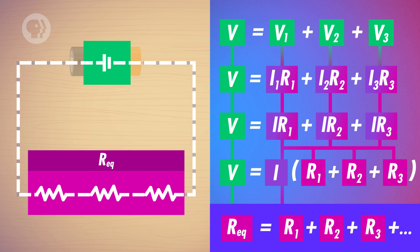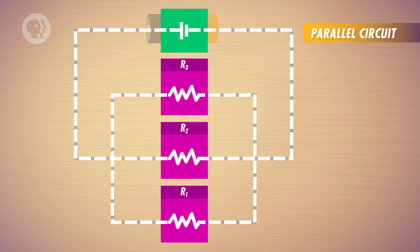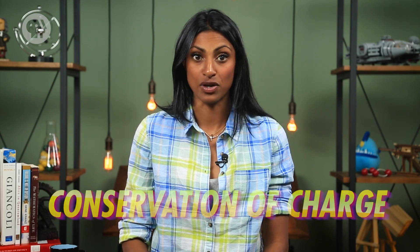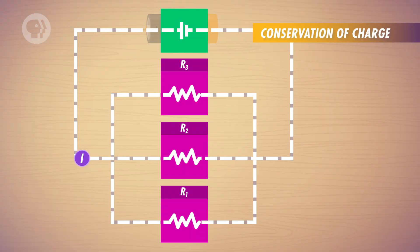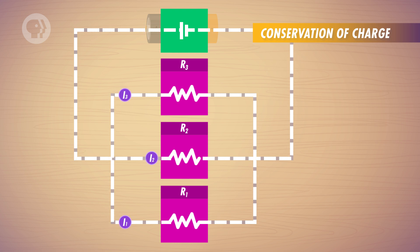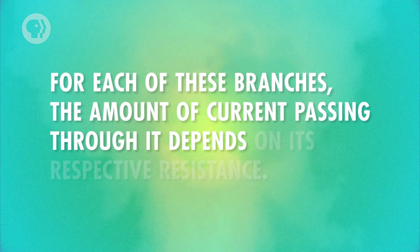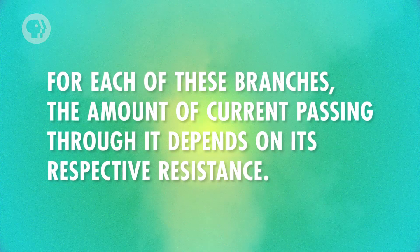Now, there's another way you can combine resistors in a circuit — by splitting one path of the current into two or more branches. When multiple resistors are configured so the current splits into many branches from a single source, they're said to be connected in parallel. And in the case of a parallel connection, you want to pay close attention to the principle known as the conservation of charge. This principle states that all the current flowing to the junction where the path splits equals all of the current flowing out of the same junction — what goes in must come out. For each of these branches, the amount of current passing through it depends on its respective resistance. And since you no longer have a single current throughout your whole circuit, charge is not limited to one path.